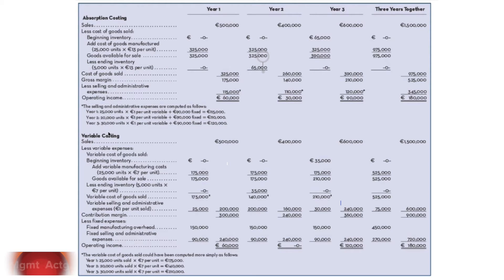We're going to compare absorption costing with variable costing. Let's go across the top part of the screen first. Here's our sales each year — we sold 25,000 in the first year, only 20,000 in the second year, and 30,000 in the third year. Beginning inventory was zero in the first year. We sold everything we made: 25,000 units at $13 per unit. There's our cost of goods sold. No ending inventory. We end up with $60,000 in net income.